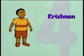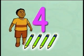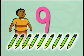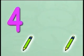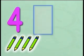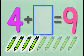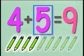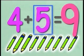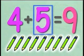Krishnan has four pencils. How many more pencils must he buy to make nine pencils? Let's write this as a number sentence. Krishnan has four pencils. What number added to four will give him nine? Yes, Krishnan must buy five pencils to make nine pencils.